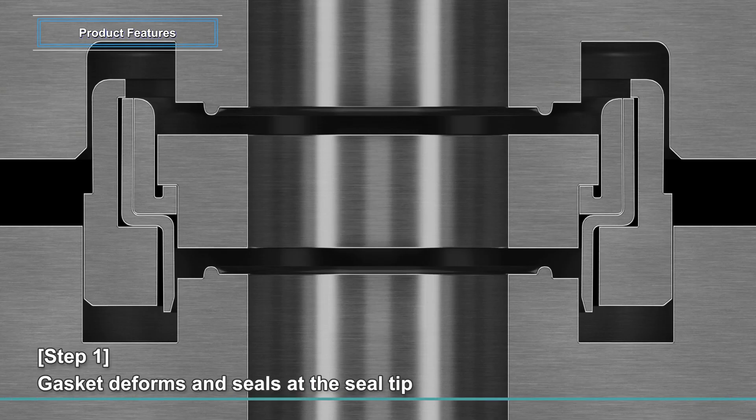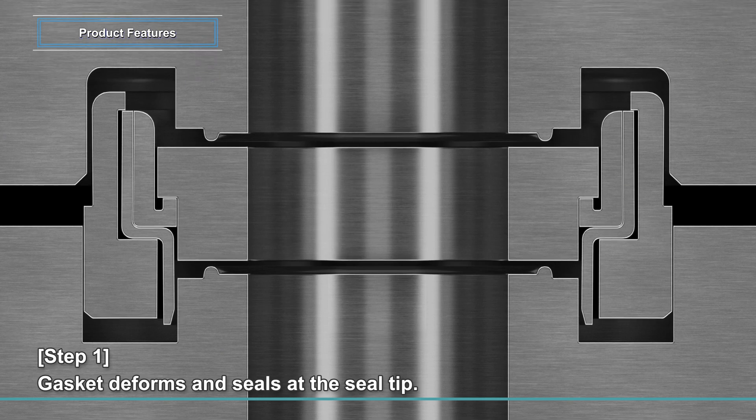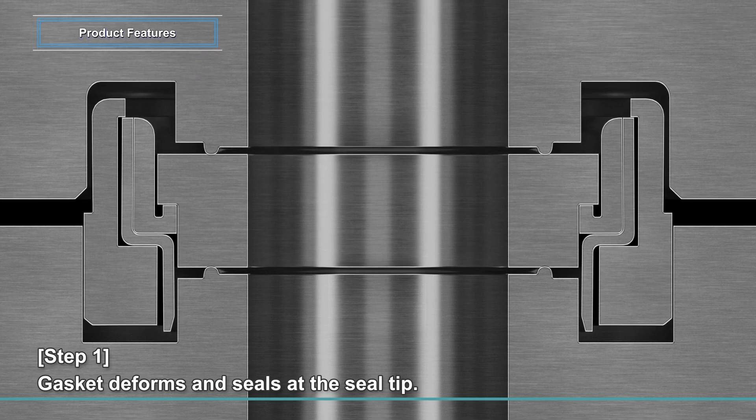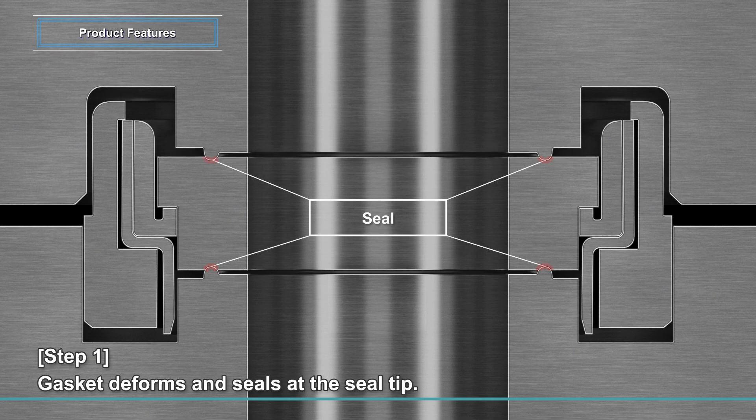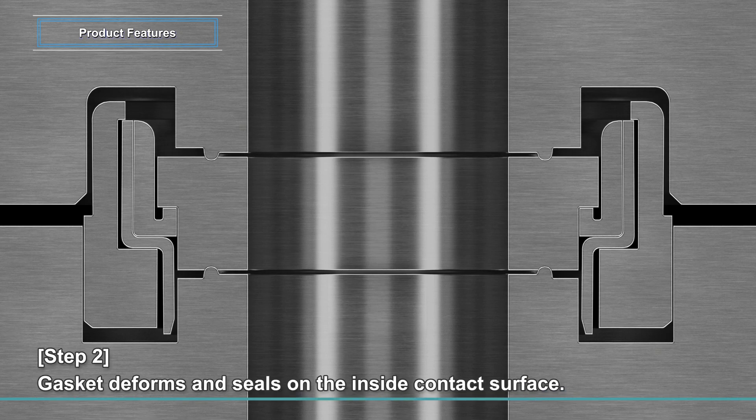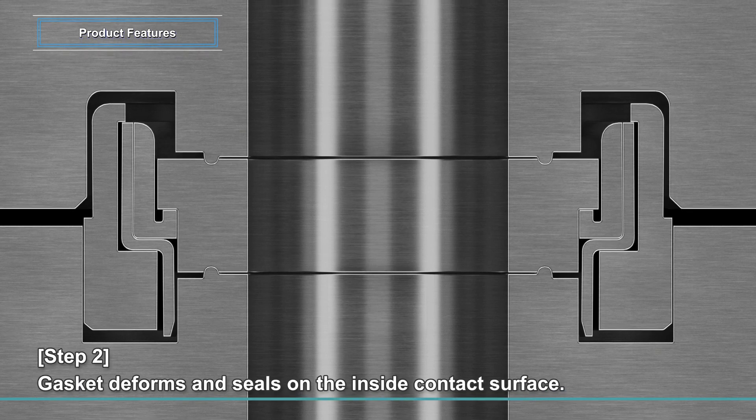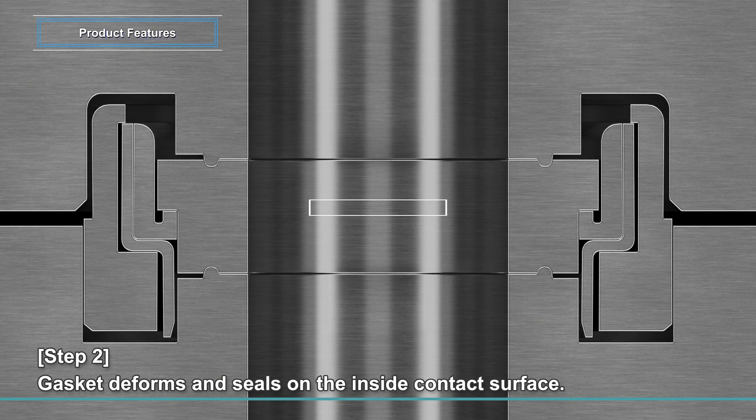Step 1: When the top component starts to be tightened with silver-plated cap screws, the gasket is deformed and sealed at the seal tip. Step 2: Subsequently, the gasket is further deformed and sealed on the inside contact surface.